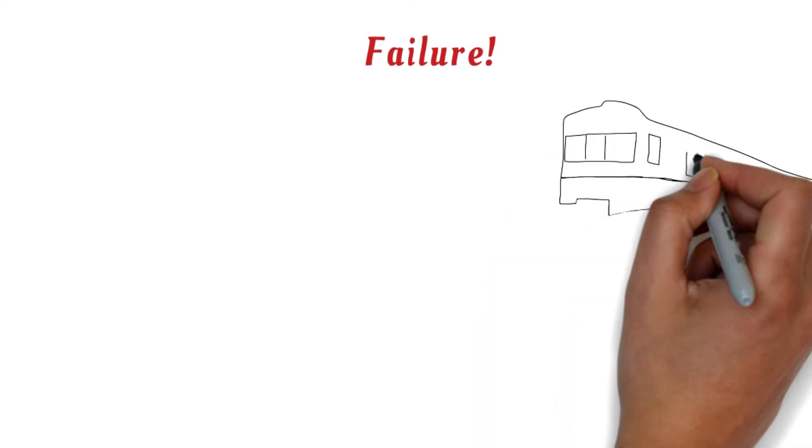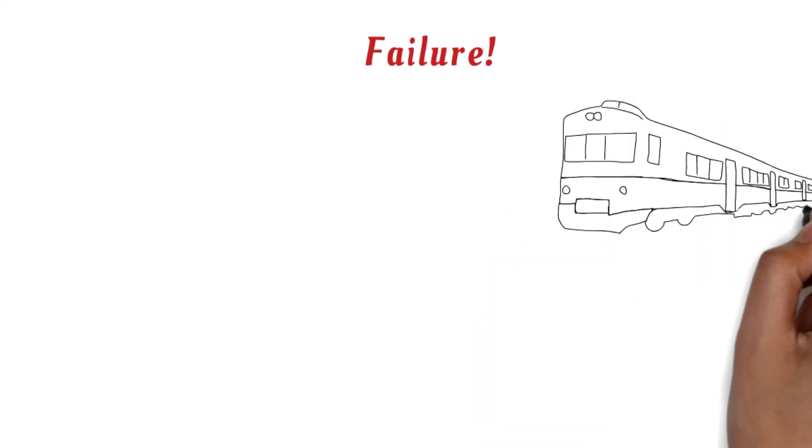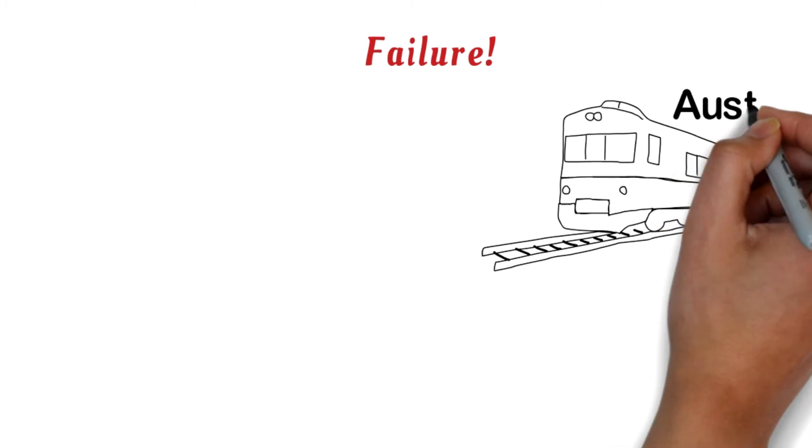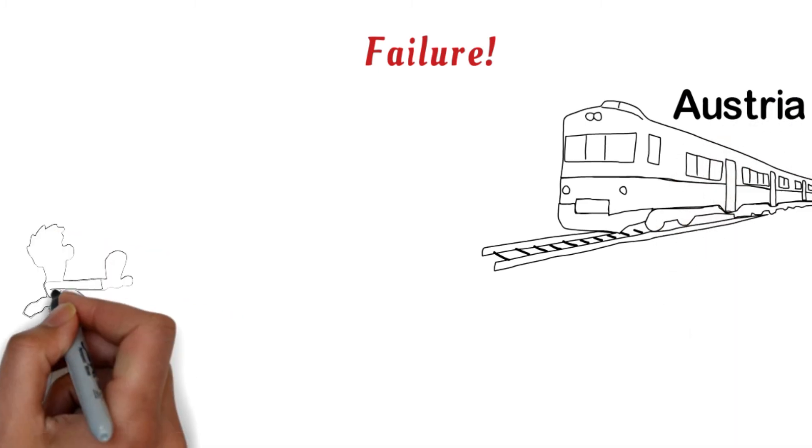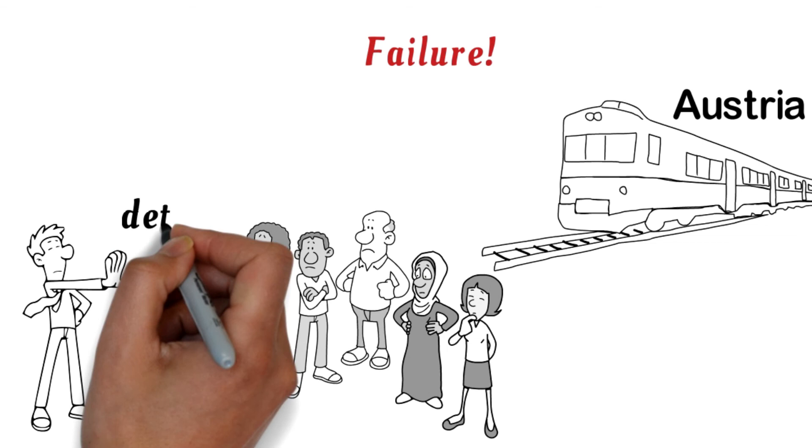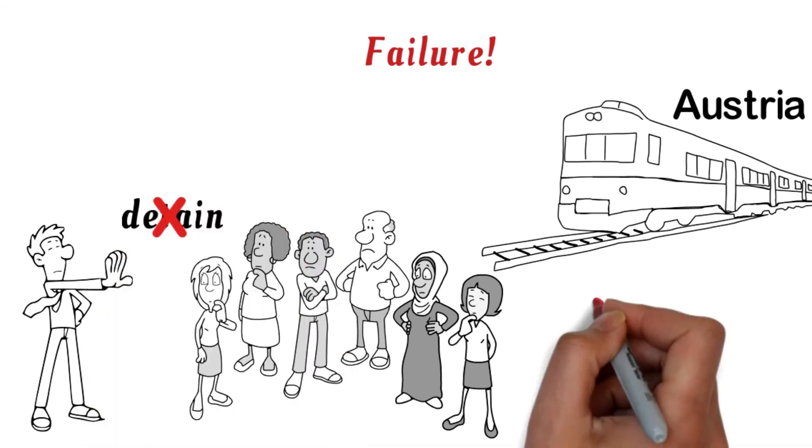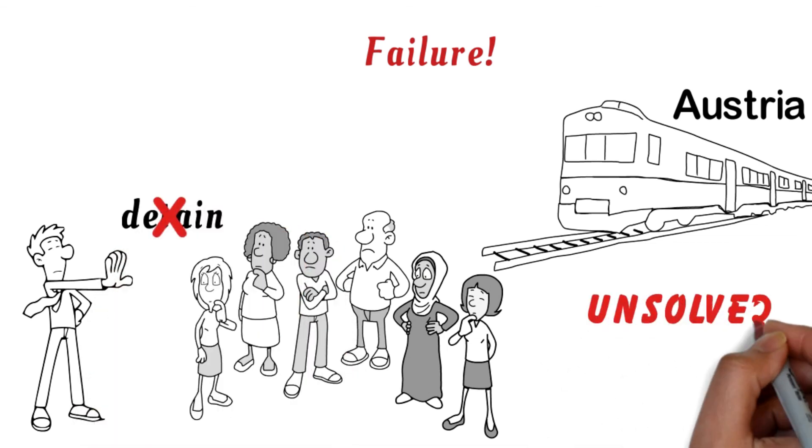Failure. You could not discover the murderer in time. When you pull up to the train station in Austria, you cannot detain the passengers for long. With little evidence and no suspects, the train is emptied and the case goes unsolved. Here's to hoping that the killer won't kill again.